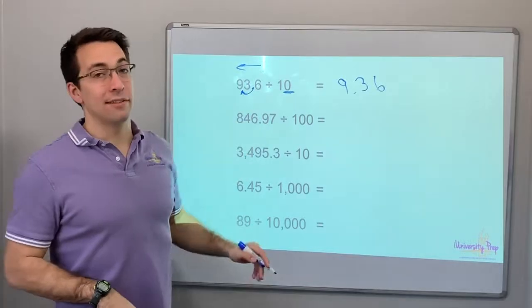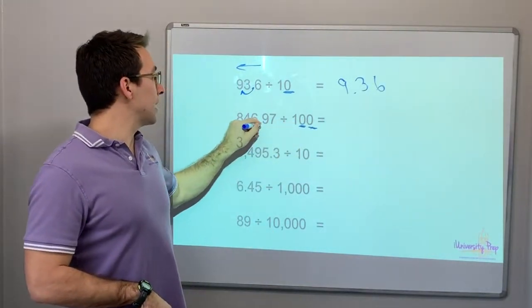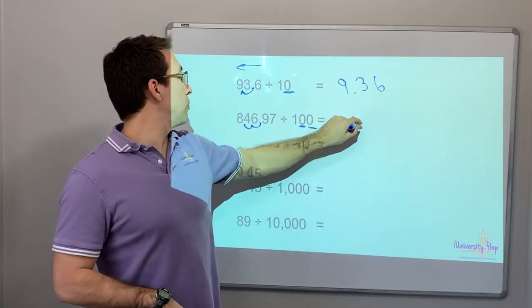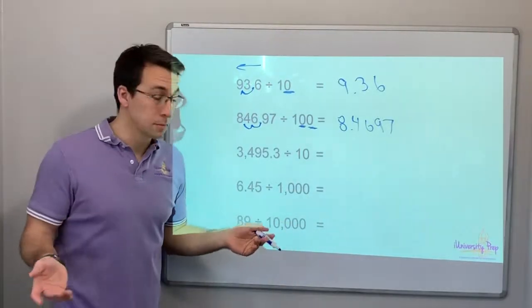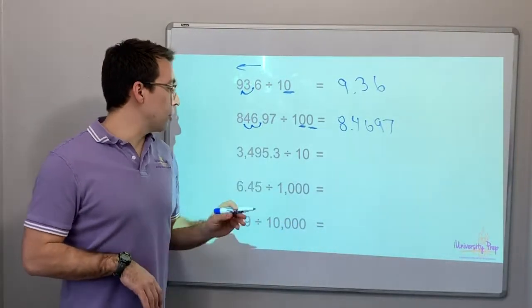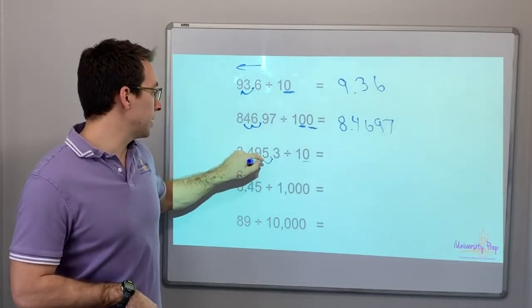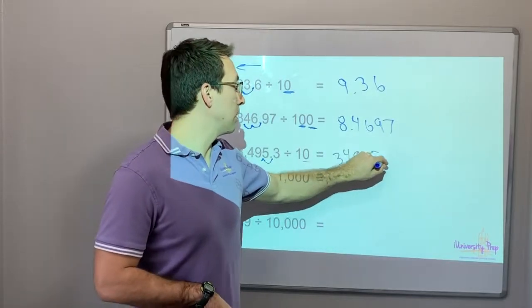846.97 divided by 100. There's two zeros. So we'll move the decimal one, two places: 8.4697. 3,495.3 divided by 10. There's one zero. So we'll just move it one place: 349.53.